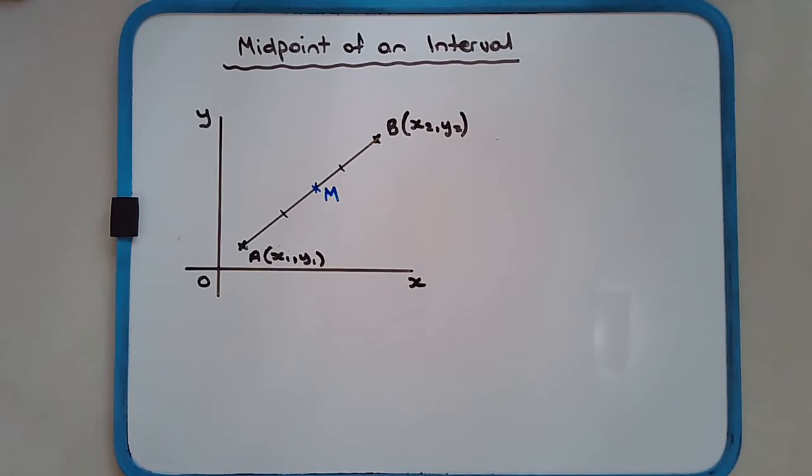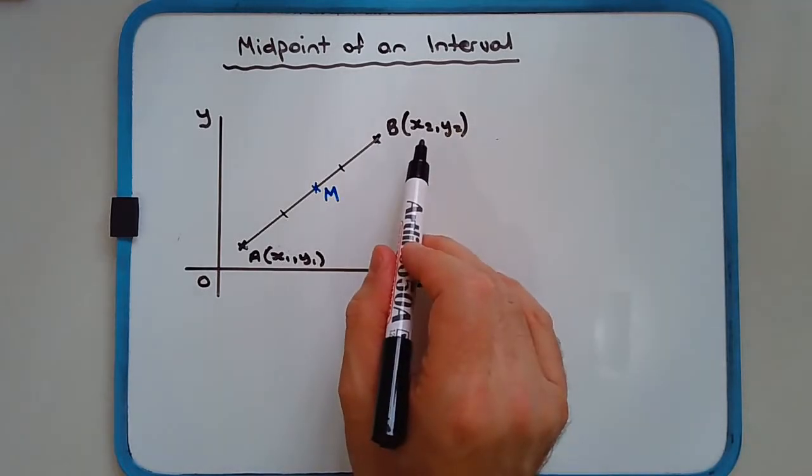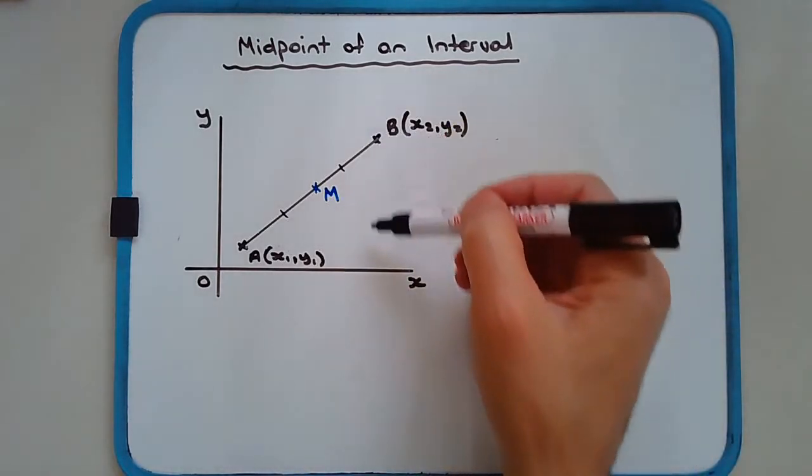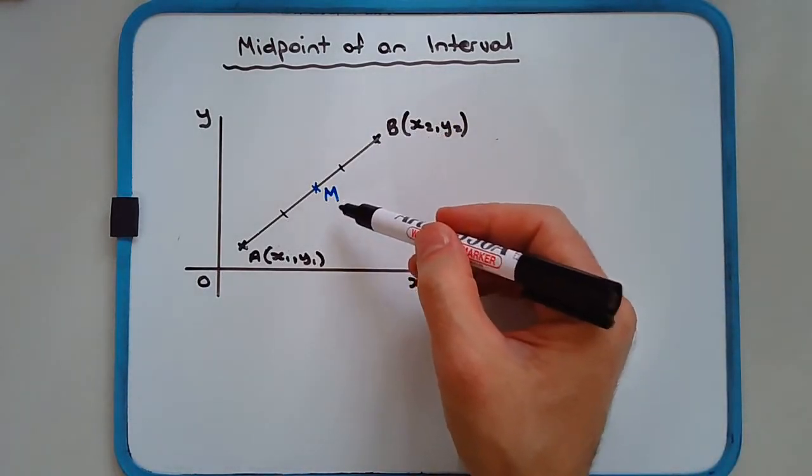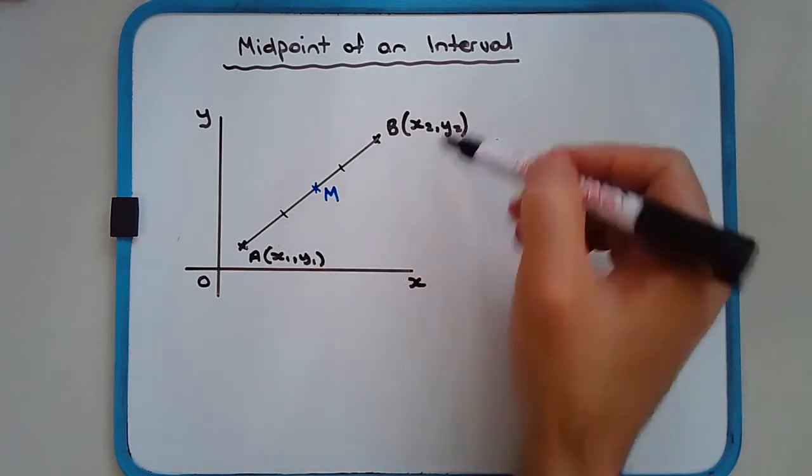So it stands to reason that horizontally M should be exactly in between x1 and x2, and vertically M should be exactly in between y1 and y2.